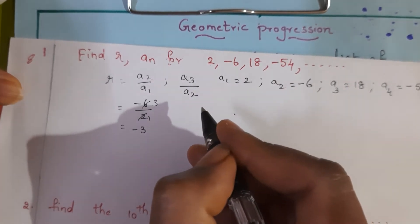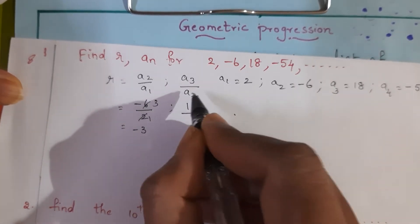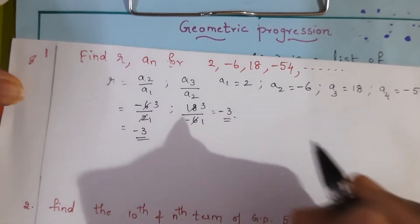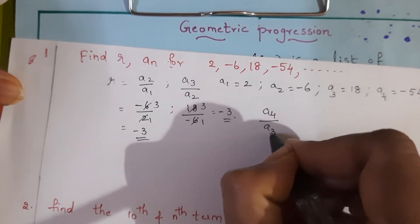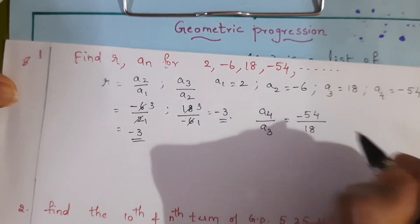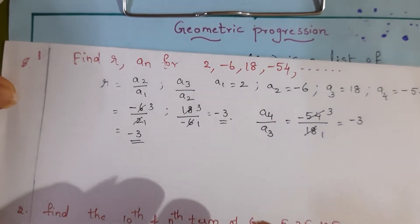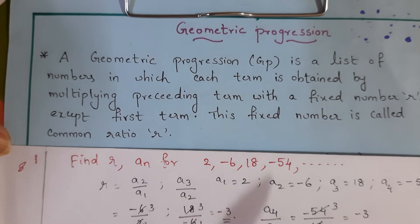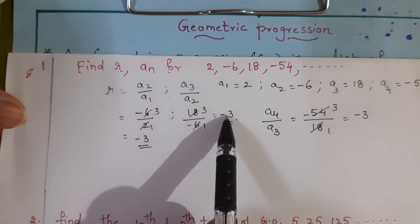Let us check with the other numbers also. A3 by A2 means 18 by minus 6, and again we get minus 3. We can also check with the 4th and 3rd terms: A4 by A3 is minus 54 by 18, which also gives minus 3. According to the definition of geometric progression, we multiply the preceding term by a fixed number, which here is minus 3. So the common ratio R is equal to minus 3.